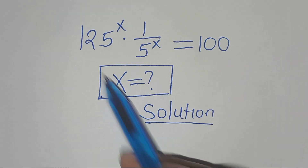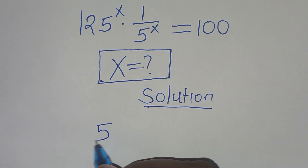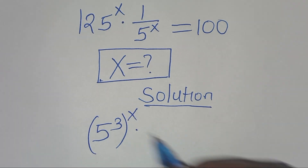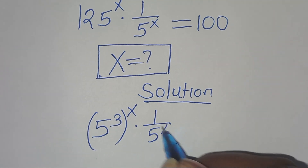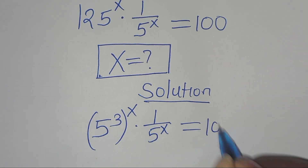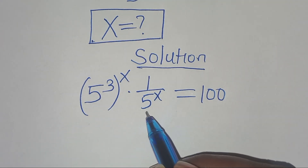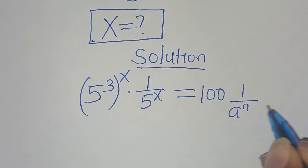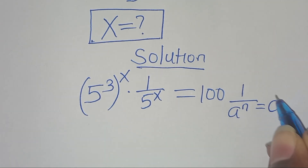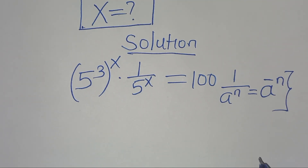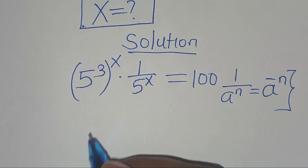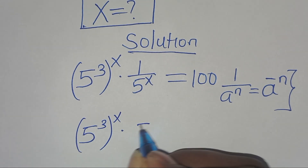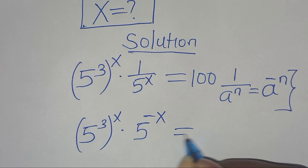We can express 125 as 5 to the power of 3, then raised to the power of x, multiplied by 1 over 5 to the power of x, equals 100. Now, 1 over 5^x is in the form of 1 over a^n, which we can express as a to the power of minus n. Applying this property, we have 5^3 raised to the power of x times 5 to the power of minus x equals 100.